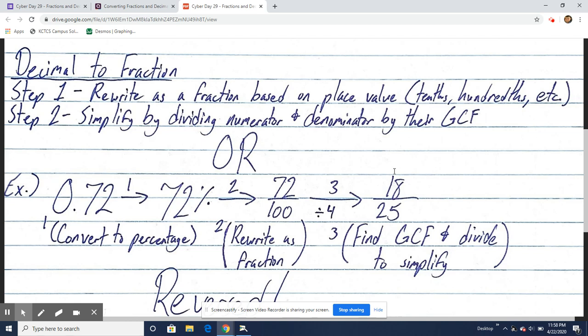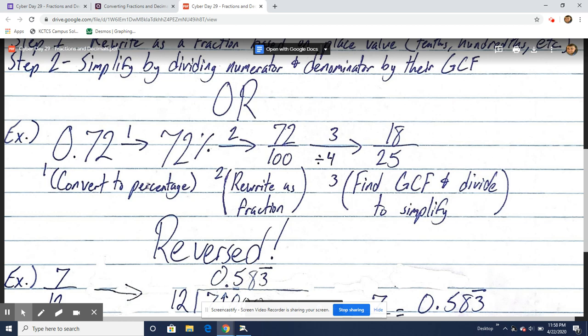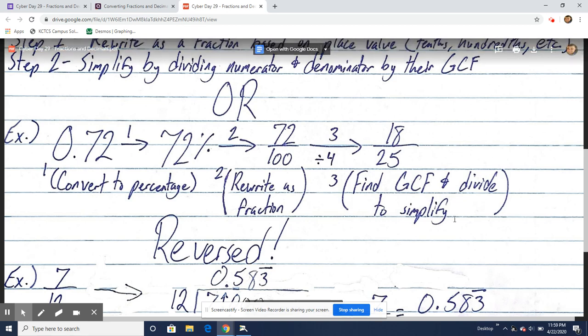Or, you could also do it like this and throw percentages into the mix. You could convert the decimal to a percent, then rewrite as a fraction if that's easier for you. After that, find the greatest common factor and divide to simplify.